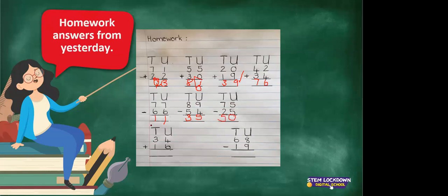Now this is one that is going to be a bit harder. What do we do if we plus, and it's 34 plus 16? We have 4 plus 6 equals 10. Remember, we are not allowed to write 10 or 2 numbers in the block. So we write down the 0 and we carry the 1 over to the 10s. Then we add them all up: 1 plus 3 equals 4, and plus that 1 equals 5.